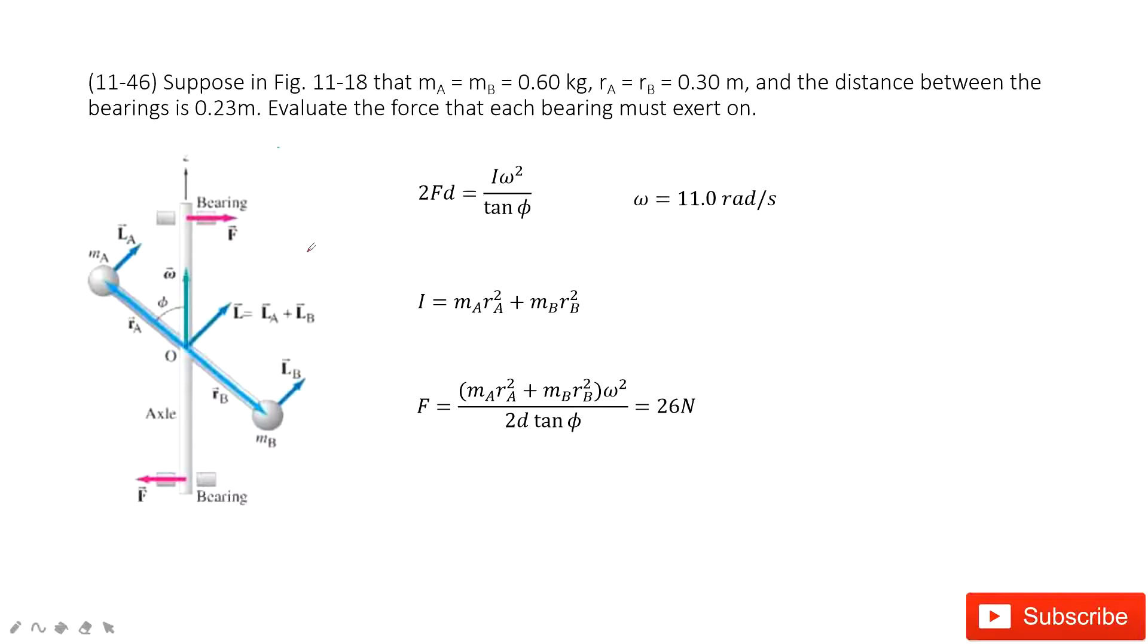Now you can see in this system, the mass A, mass B are given, and the radius for A and B is given. We need to find the force for each one.